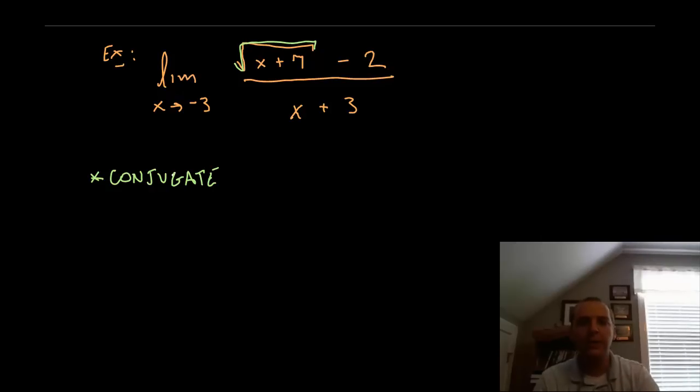But the conjugate of a radical expression like this will repeat the exact same radical expression, the square root of x plus 7 with a 2, but instead of a minus we'll put a plus. That's what you do with a conjugate.